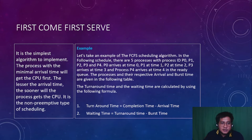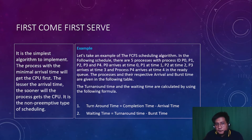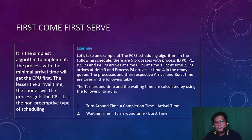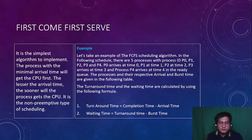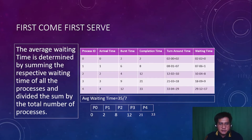First Come First Serve is the simplest algorithm to implement. The process with the minimal arrival time gets the CPU first — the lesser the arrival time, the sooner the process gets the CPU. It is a non-preemptive type of scheduling. FCFS really follows the concept of a queue: the first job created and arrived in the queue will be the first to be executed, and the last to arrive will be the last to be executed. Here is an example of a FCFS scheduling algorithm with five processes.